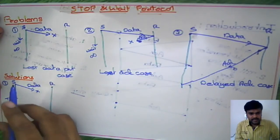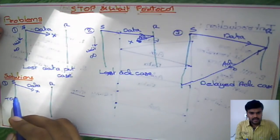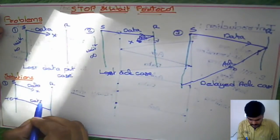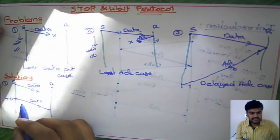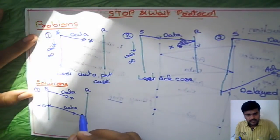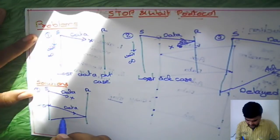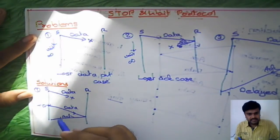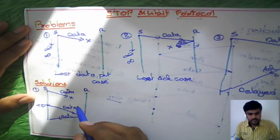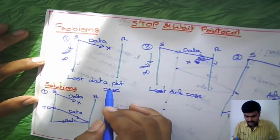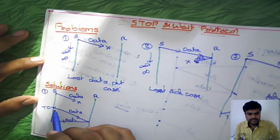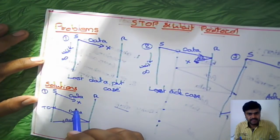After the timeout period is over, he is going to resend this data packet. Assume that this time the packet is received safely at the destination, so acknowledgement is given and the sending and receiving process continues. So for the first problem — the lost data packet case — the solution is introducing the timeout concept in the Stop-and-Wait protocol.